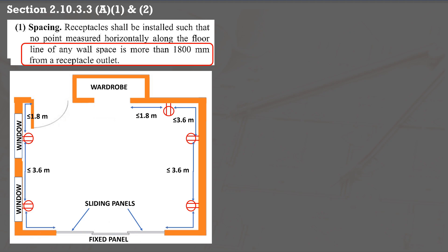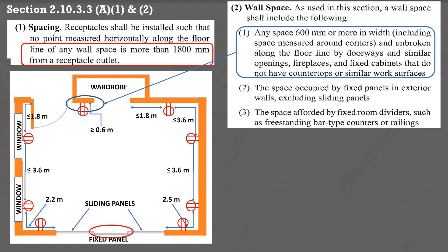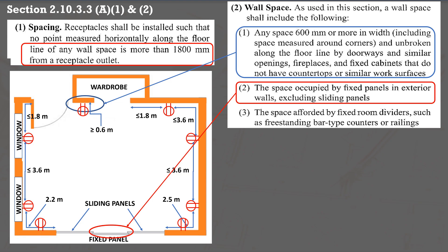Ensure that no point on the wall is more than 1,800 mm from a doorway. Hence, check the distance between the edge. If these are more than 1,800 mm, additional outlets must be provided. For a short wall space, in paragraph A2, if the length of the wall is 600 mm or more, an outlet will be required. Further, for a fixed panel mentioned in paragraph A2 item 2, a fixed panel is considered wall space.